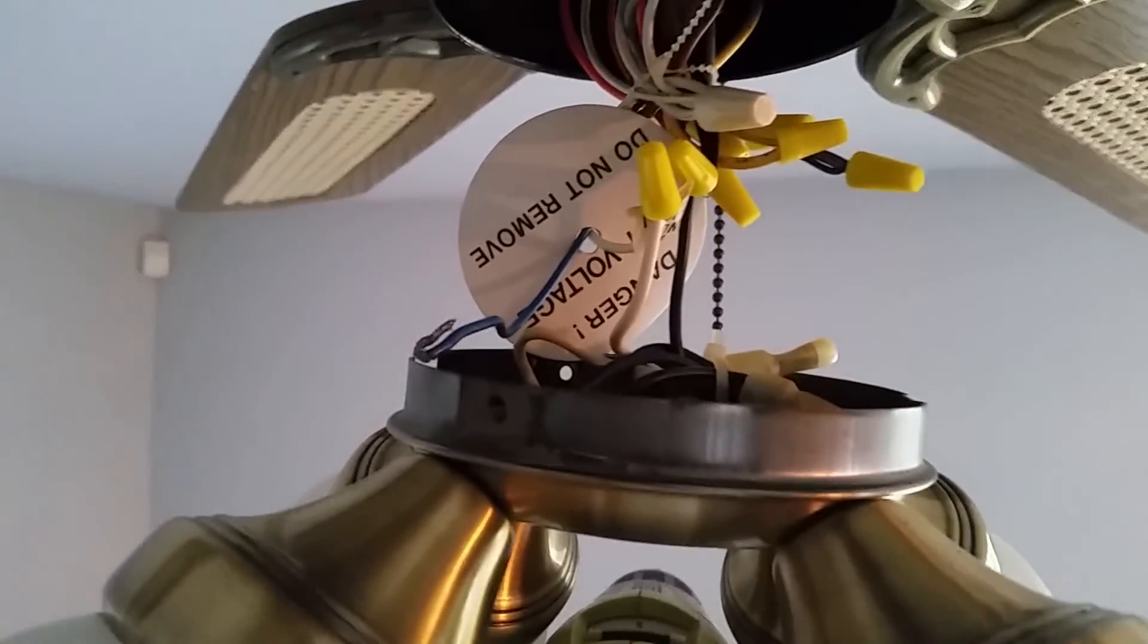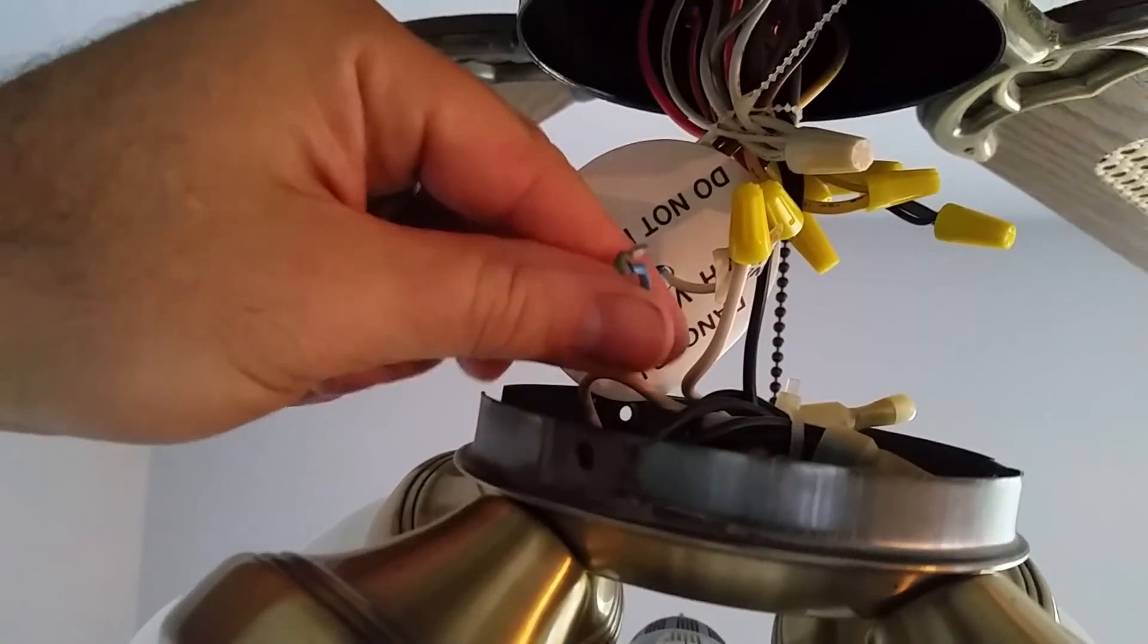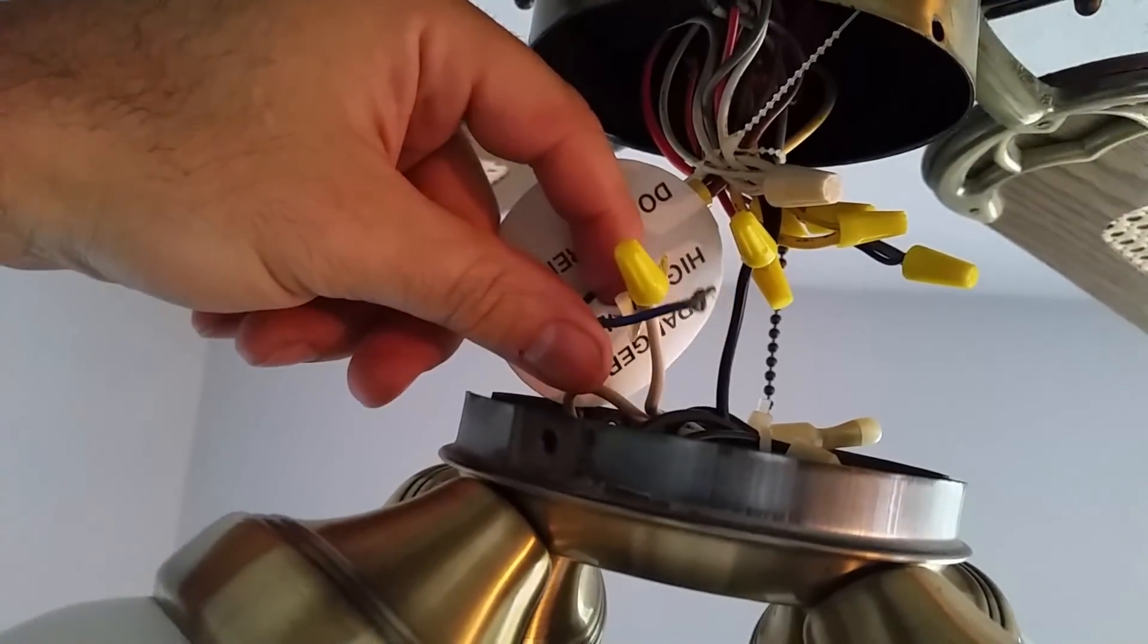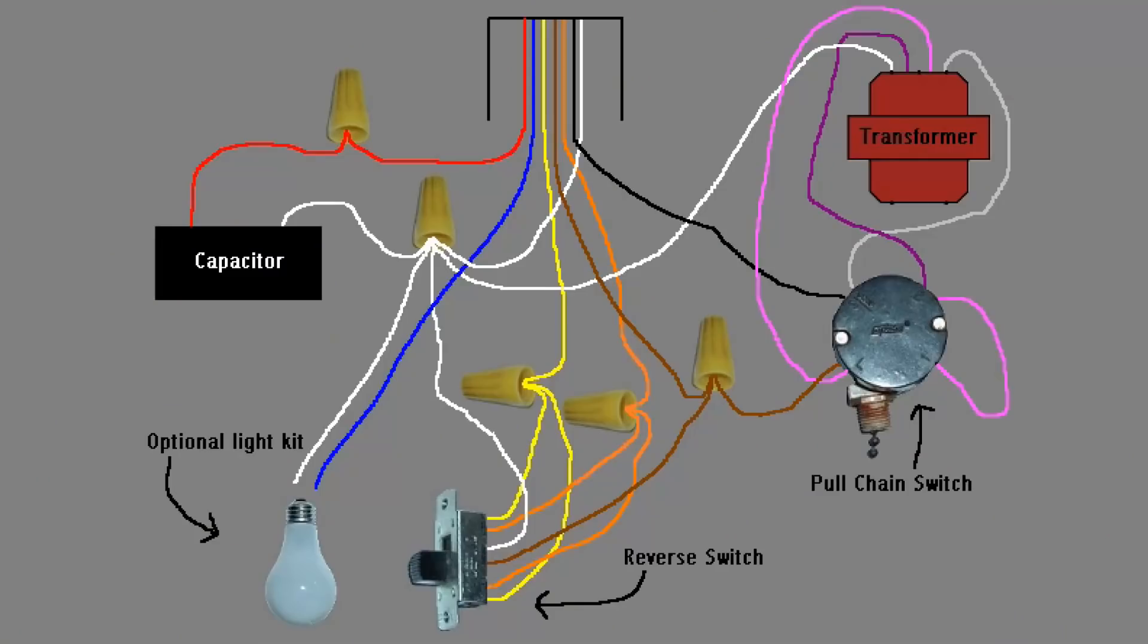The two small wires that come out of here are labeled high voltage, but they have some kind of voltage regulation that only allows a certain amount of wattage for candelabra style bulbs.